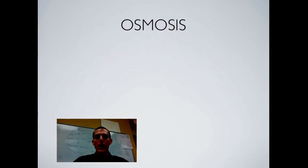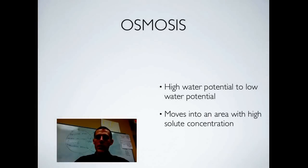A little bit more about osmosis. Things move from an area of high water potential to an area of low water potential. And what I mean by high and low water potential is just saying that there's a lot of water or there is a little water. If an area has got high water potential, that means it's got a lot of water in it. If it's got low water potential, it's got a little water in it. And it moves into an area with a high solute concentration.